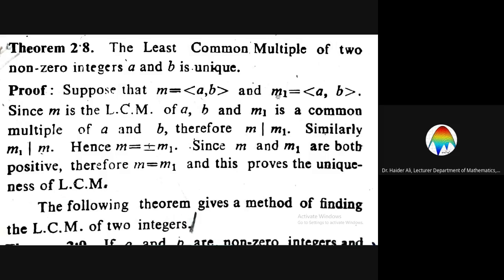m1 is also an LCM. If it is an LCM, it is also a common multiple. First, use m as the LCM and m1 as a common multiple. Next, use m1 as the least common multiple and m as a common multiple. Your problem will be solved — this is how this theorem is done.